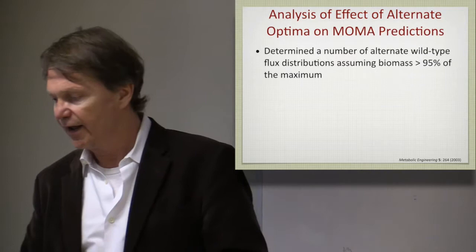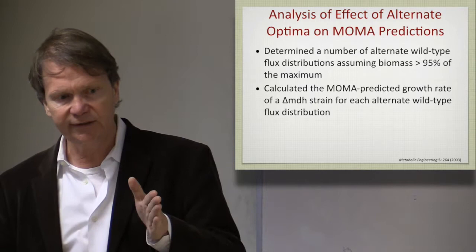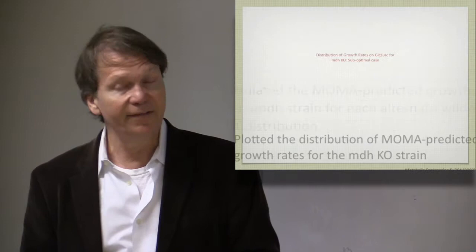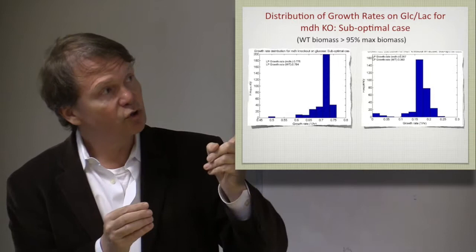And then you can project them based on a knockout, in this case based on malate dehydrogenase, and look at the MOMA predictions. You can just now plot the predicted growth rate as a function of the starting point. And you can generate histograms that look like this, so you don't get a single prediction, but you take an assembly of points that you think represent your phenotype, and kind of maybe variations therein, and then you project that.